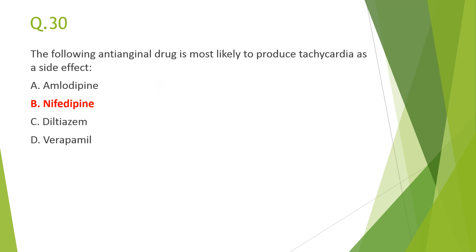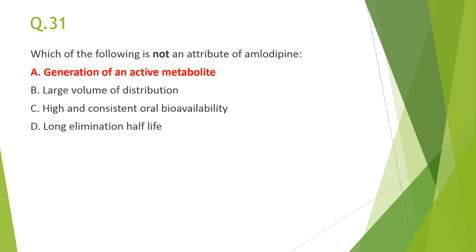Next: the anti-anginal drug most likely to produce tachycardia as a side effect — answer B, nifedipine. Diltiazem and verapamil produce bradycardia by inhibiting the SA and AV nodes. Nifedipine is a rapidly-acting dihydropyridine that causes rapid blood pressure reduction, triggering reflex baroreceptor-mediated sympathetic activity and tachycardia. Since nifedipine's action is predominantly on blood vessels with negligible cardiac action, reflex tachycardia predominates.